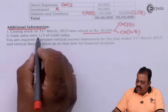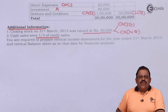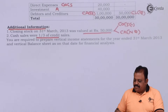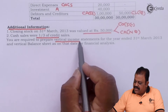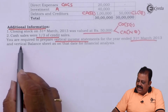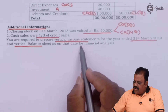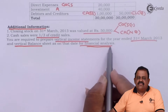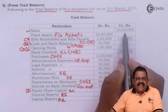Cash sales were one third of credit sales. This is information relating to the proportion of cash sales and credit sales. You are required to prepare a vertical income statement for the year ended 31st March 2013 and a vertical balance sheet as on that date for financial analysis. Total sales here is 20 lakhs.